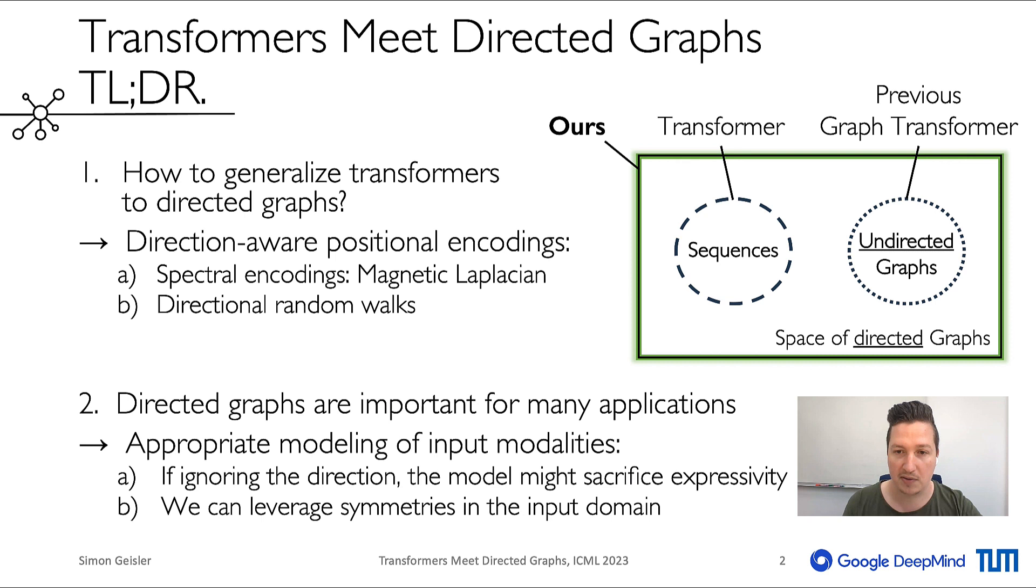we discuss why directed graphs are important in the first place. For example, we show that ignoring direction sacrifices expressivity, since instances with different labels may map to the same undirected graph. Alternatively, we can use directed graphs to model symmetries in the input domain.